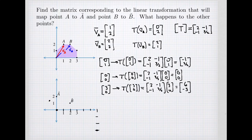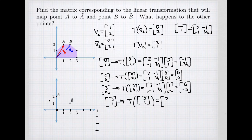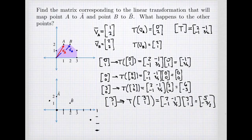My last point is at (3,1). The point (3,1) gets sent to an image by taking 3 times the first column and 1 times the second column of the standard matrix. That gives us (5, -3/2) — so the point maps to (5, -3/2), which is approximately at that location on the graph.